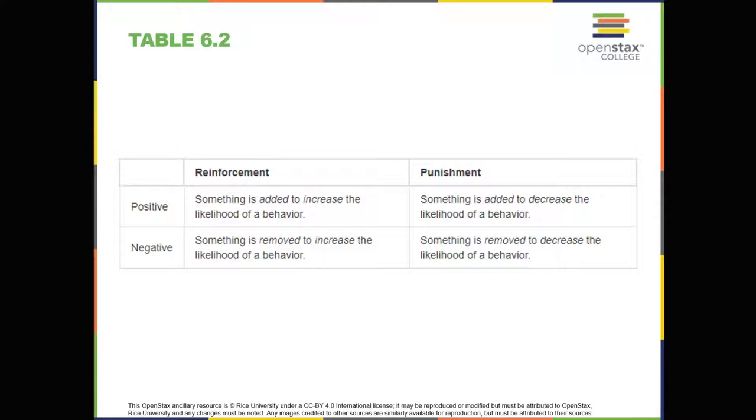Primary and secondary reinforcers. Rewards such as stickers, praise, money, toys, and more can be used to reinforce learning. Let's go back to Skinner's rats again. How did the rats learn to press the lever in the Skinner box? They were rewarded with food each time they pressed the lever. For animals, food would be an obvious reinforcer. What would be a good reinforcer for humans? For your daughter, Sydney, it was the promise of a toy if she cleaned her room.